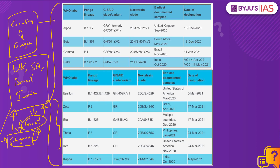To replace this naming system with a simpler version, the WHO has recently approved the usage of Greek alphabets such as Alpha, Beta, Gamma, Delta, etc., to provide a common name that can be easily remembered by the public in place of the technical scientific names assigned for the different variants. Remembering scientific names might be difficult for media and the common people, and it hampers communication. Under the new naming system, scientific names will still be used by the scientific community, but a simpler common name based on Greek alphabets will also be provided.